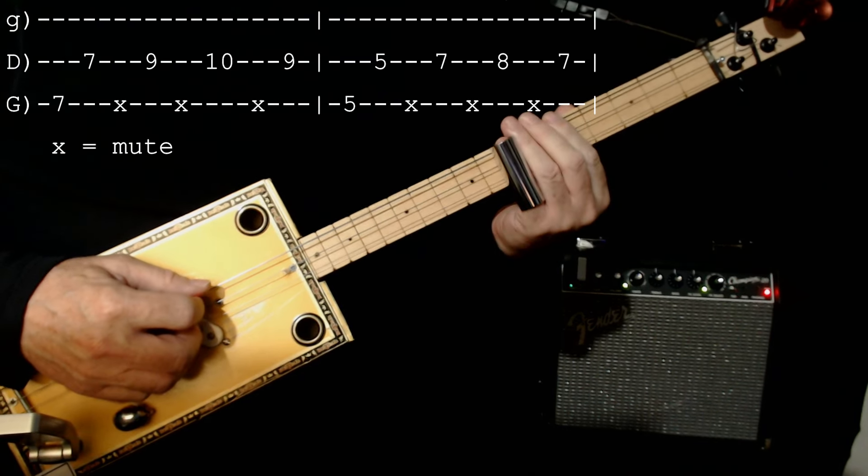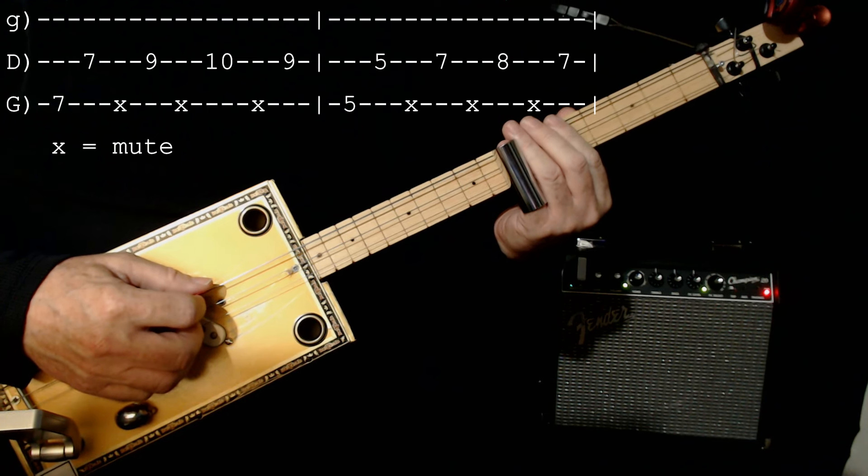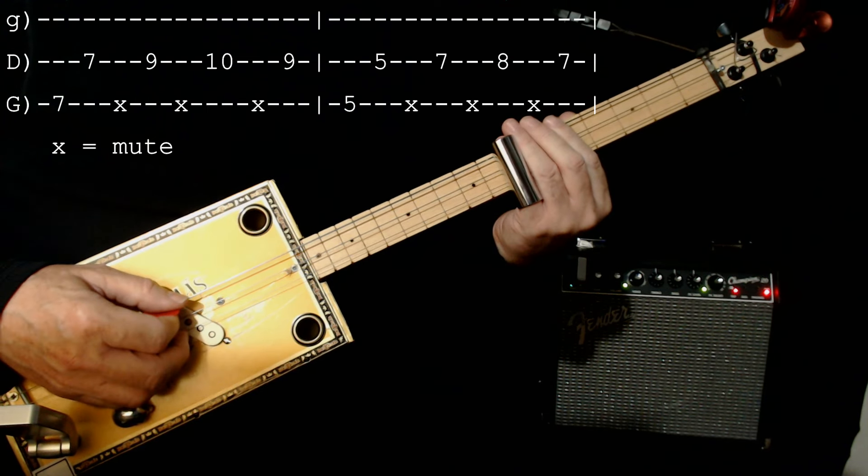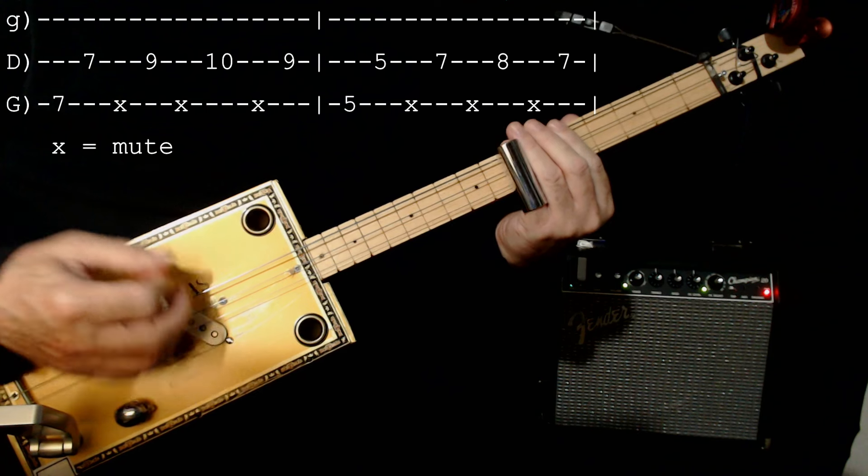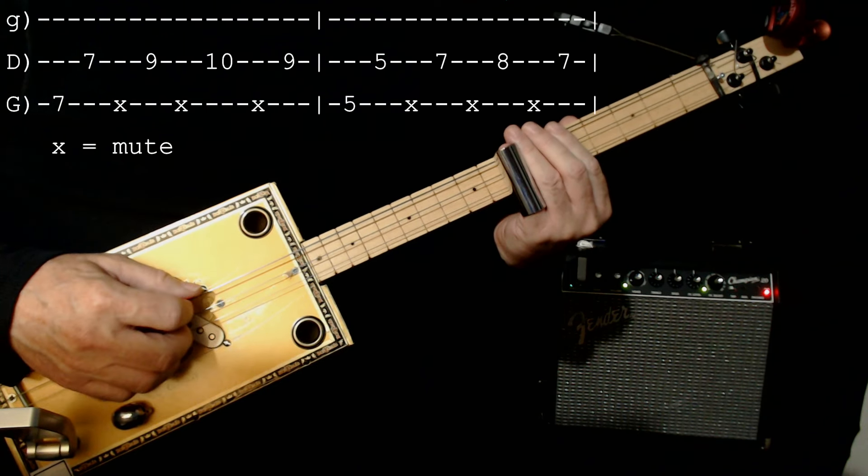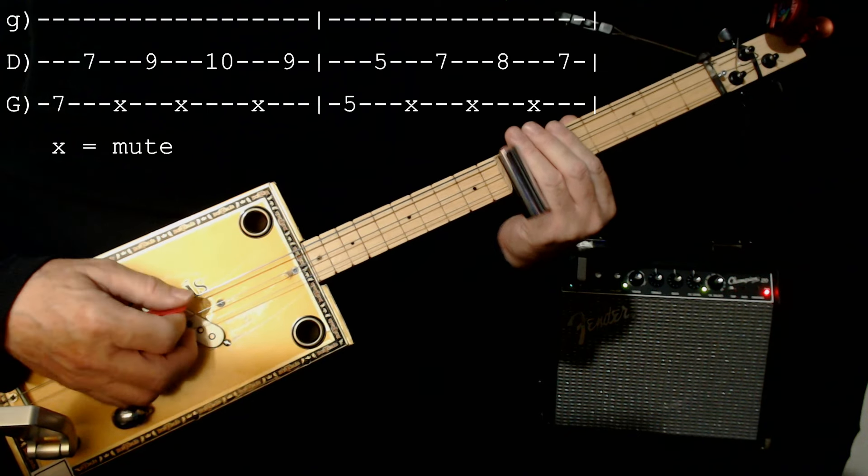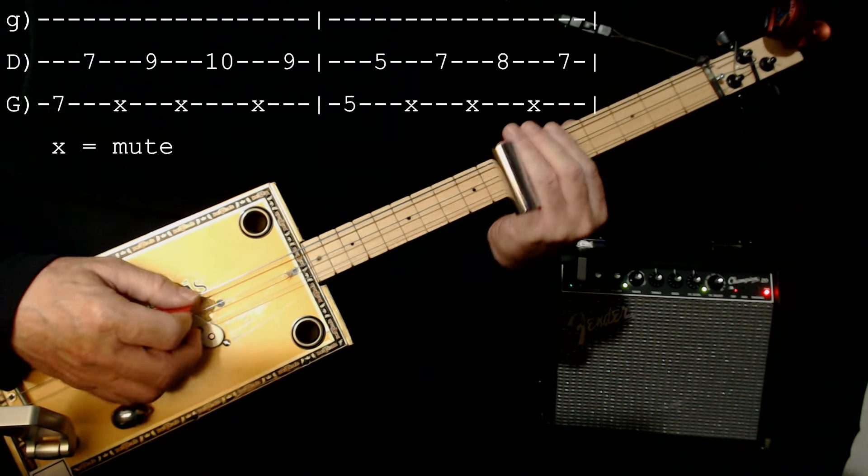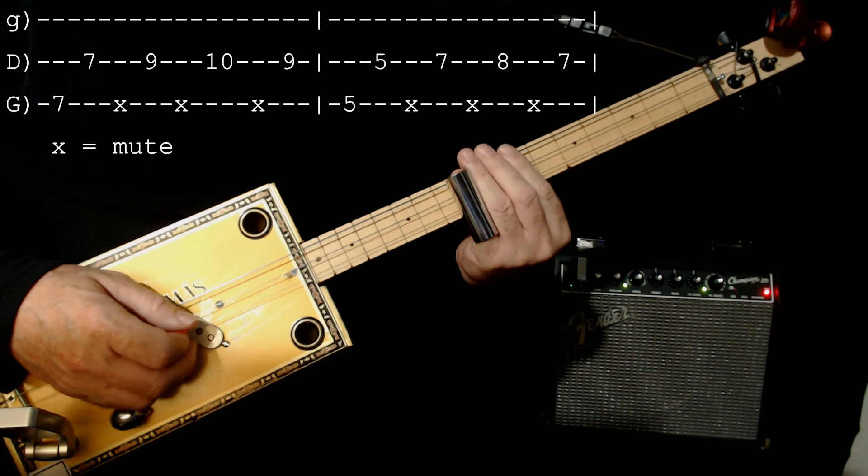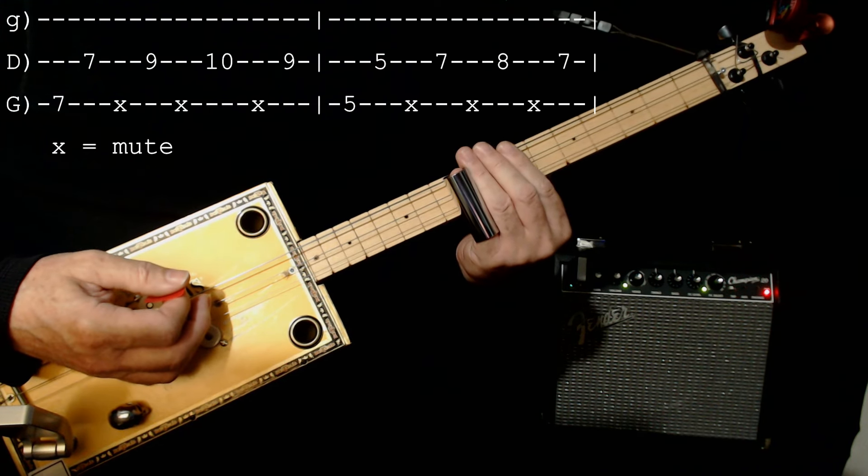So now we go up to the five chord. We don't play the whole lick, I'll slow it down for you. It's seven. The five chord is found on the seventh fret, which in this case is a D chord. So we got seven, seven in the middle, seven, nine, seven, ten, seven, nine. Then we stop there and do the same thing.